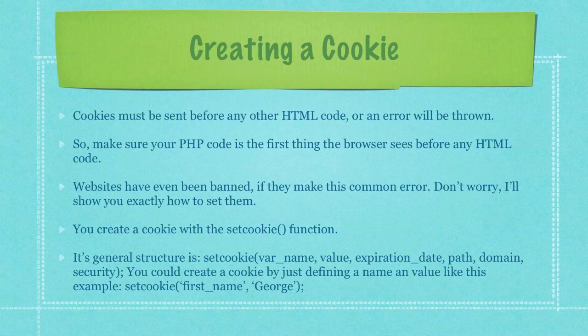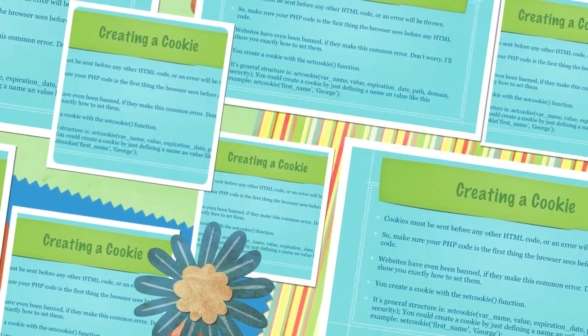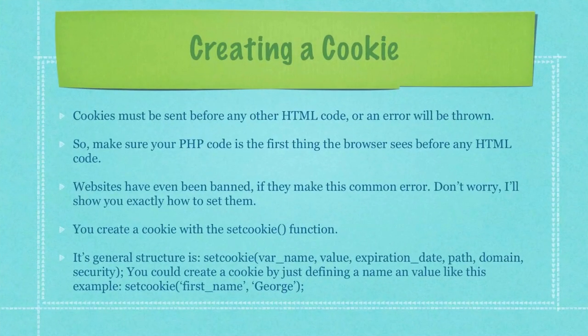You create a cookie with the setCookie function. Its general structure is setCookie, followed by brackets, whatever you want your variable name to be, the value you want to assign to it, and if you want to assign an expiration date, and a whole bunch of other things which I'll go through in a minute. You could create a cookie by just defining a name and a value like this example here, where I define the value George to the variable first name.